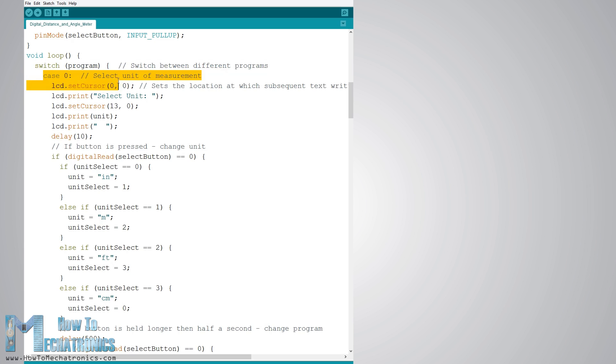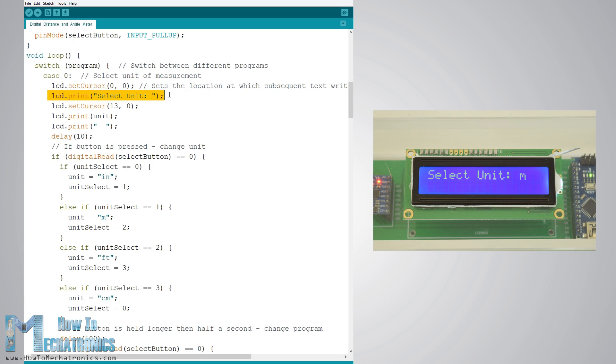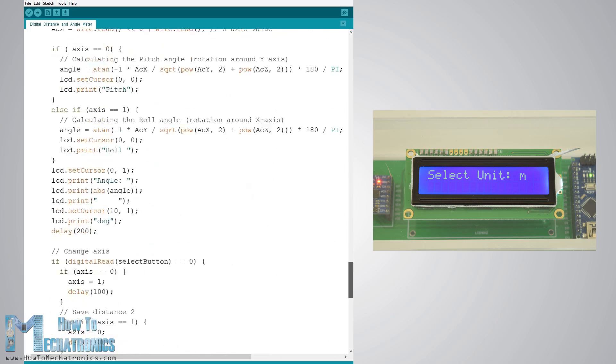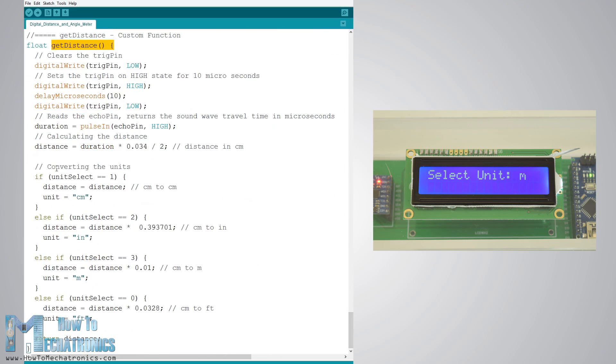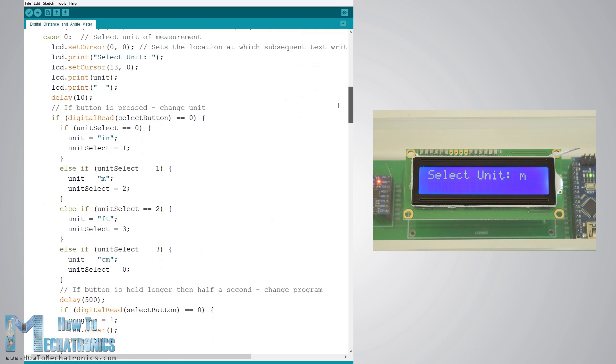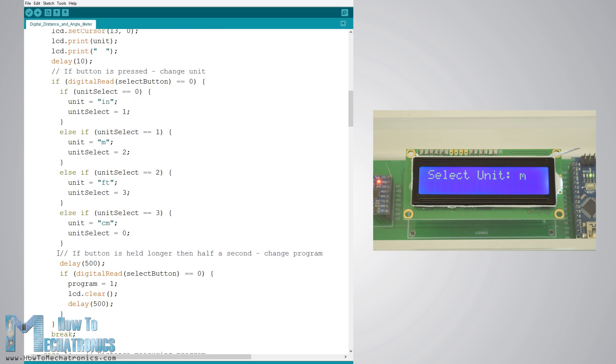In the first case, case number 0, we will select the unit of measurement. Using the lcd.print function we print some tags on the LCD and using the if statements we toggle through the four units of measurement. We should note here that the unitSelect variable takes action in the getDistanceCustom function, where it actually tells to which unit we should convert the basic cm units that we are getting from the ultrasonic sensor. In order to select the unit of measurement and also get into the first program of the device, we just have to hold and press the button longer than half a second.